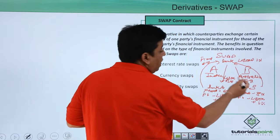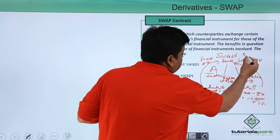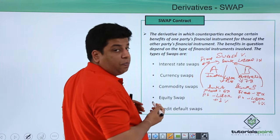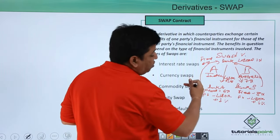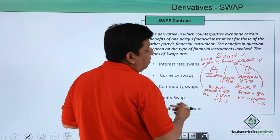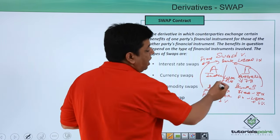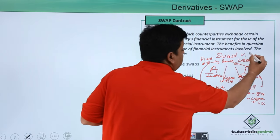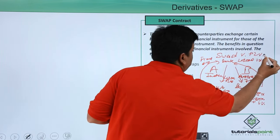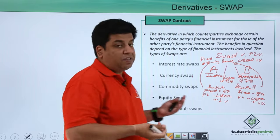So in this it makes the profit of 1%. Similarly for floating, it is taking it at LIBOR plus 1% and is giving to company A at LIBOR plus 2%, so here also it is making 2% of profit.